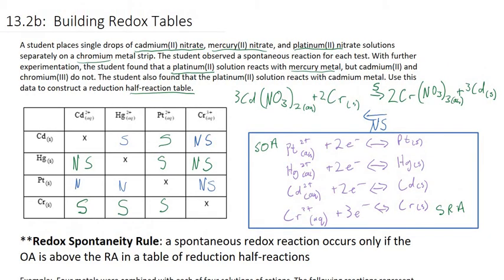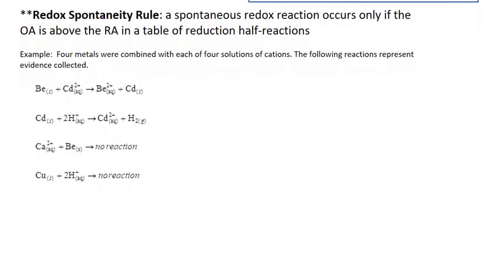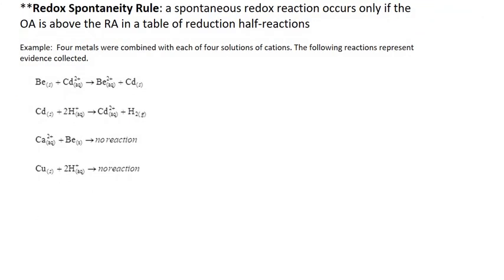Let's use that rule to follow another example that allows us to build a redox half-reaction table. This will make it so that we don't have to draw that whole big chart every time — we can just make the table directly. Four metals are combined with each of four solutions of cations. We have two reactions that were spontaneous and two that were non-spontaneous — there is no evidence of reaction for those.